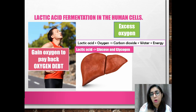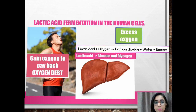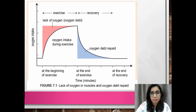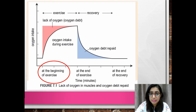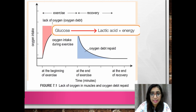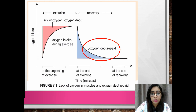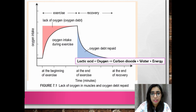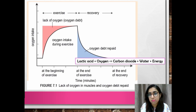Oxygen debt is paid after excess oxygen is taken in to eliminate the accumulated lactic acid. This figure shows the usage of oxygen during vigorous activity and during recovery. During vigorous activity, the rate of oxygen use exceeds supply and the muscle undergoes oxygen debt. The incomplete breakdown of glucose produces lactic acid and energy. Once vigorous activity stops, the intake of excess oxygen oxidizes the lactic acid into carbon dioxide, water, and energy. When all lactic acid has been expelled, the oxygen debt is repaid.